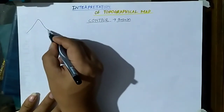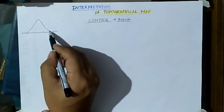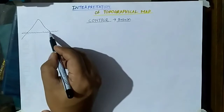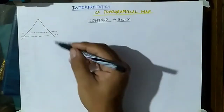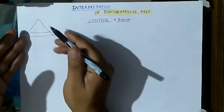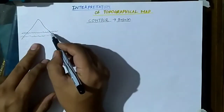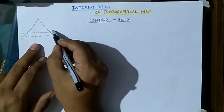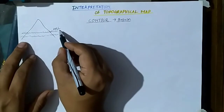Let us see how contour lines are drawn on the map. Here we have a mountain — an elevated surface. This lower level here is the surface of the sea level, which is considered as the mean sea level. The surface of the sea water is considered as mean sea level.